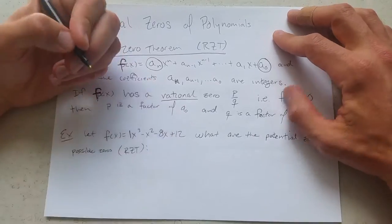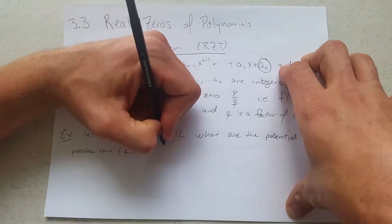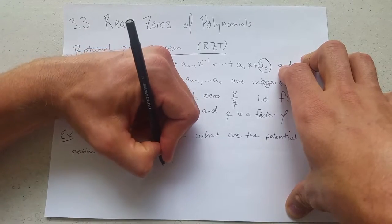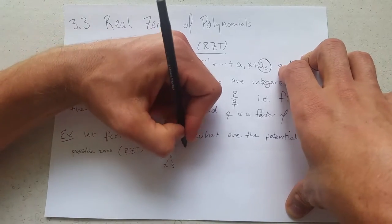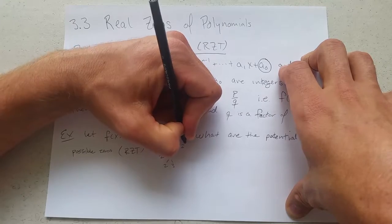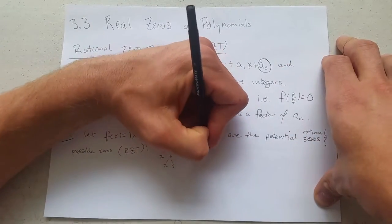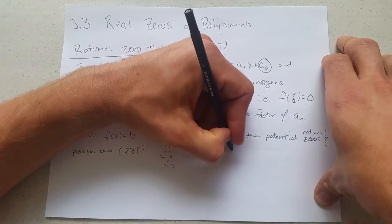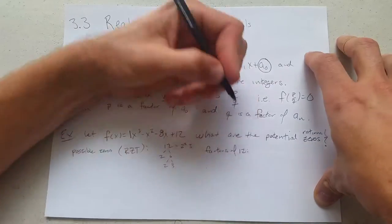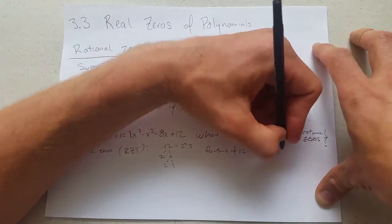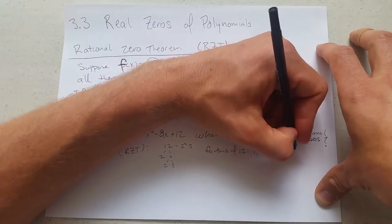We're using the rational zero theorem. What does that give us? We're going to factor 12: it's 2 times 6, 6 is 2 times 3, so 12 is 2² times 3. What are all the factors of 12? Start with 1, 2, 3, 4, 6, 12.